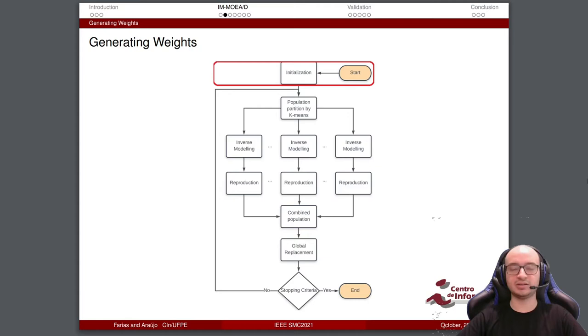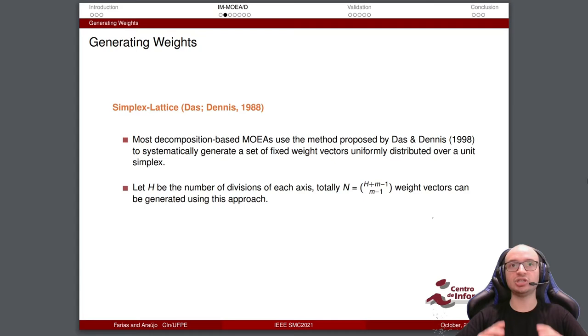To generate weights, we adopt the simplex by Das and Dennis. Most decomposition-based MOEAs use the method proposed by Das and Dennis to systematically generate a set of fixed weight vectors uniformly distributed over a unit simplex. Let H be the number of divisions of each axis, totally N weight vectors.